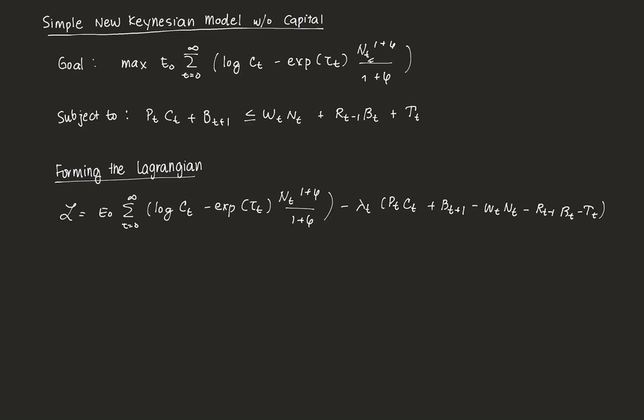Hello everyone, and welcome to the start of a short series on how to derive the behavioral equations and do some simulations on a simple New Keynesian model. In this model, we're going to use a model without capital, and we want to analyze the effects of various policy shocks on certain economic variables. The goal for this video is to derive the first order conditions needed to derive the behavioral equations, which we will do in the next few videos.